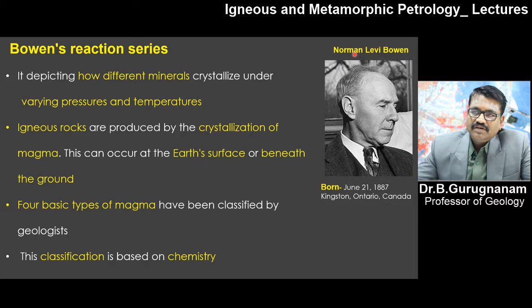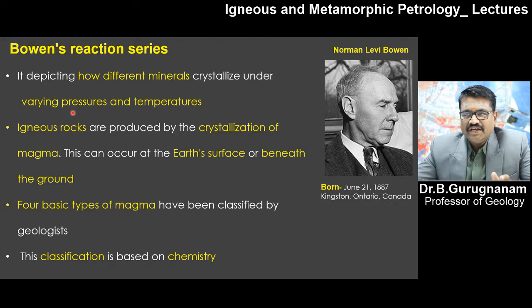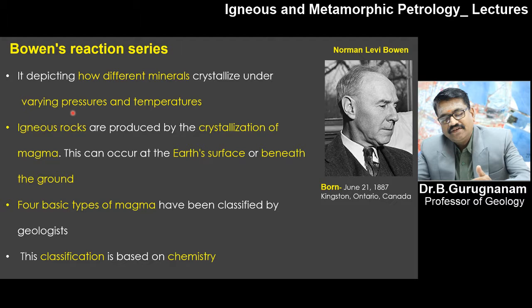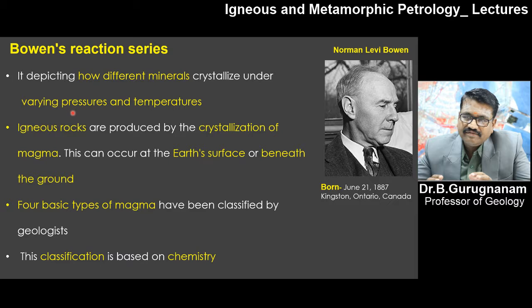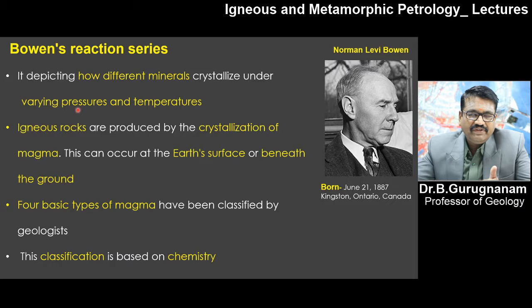Norman Levy Bowen is the first scientist who brought understanding of how different minerals are formed, or crystallized, under varying pressure and conditions. He is a very famous petrologist who studied a continuous series of magma — how magma, at different pressure and temperature, slowly gets crystallized in a continuous and discontinuous process. It is very important for an Igneous Petrologist to understand his results on how different rocks are formed under various temperature and pressure conditions.